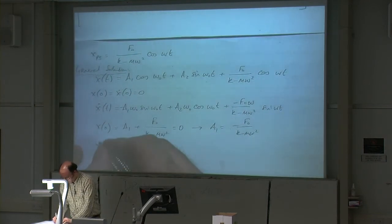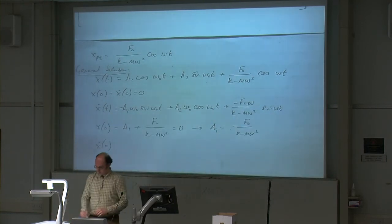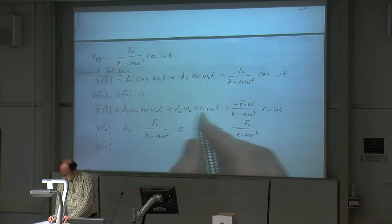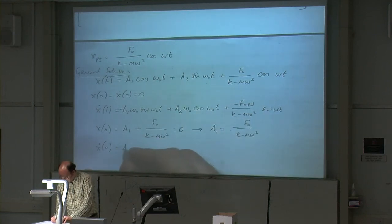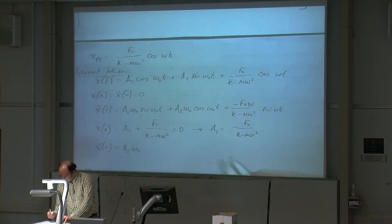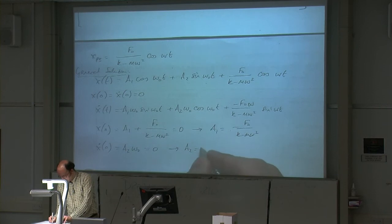Applying x-dot(0) equals 0: referring to the derivative equation, sine of 0 is 0 so the first term disappears; cosine of 0 is 1 so we have a2 omega-naught times 1; sine of 0 is 0 so the last term disappears. So we have a2 omega-naught equals 0, which means a2 must be 0.